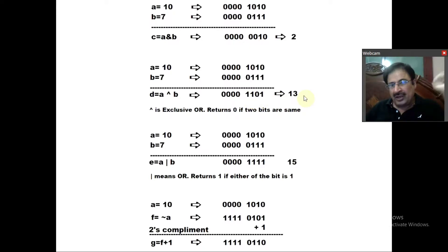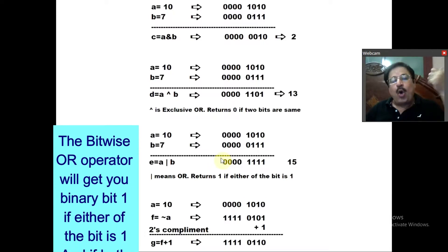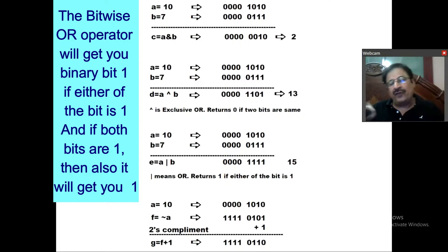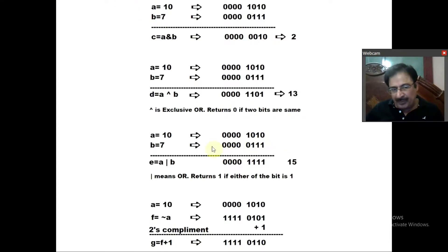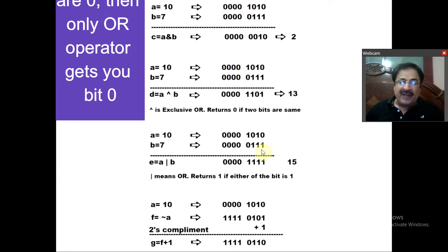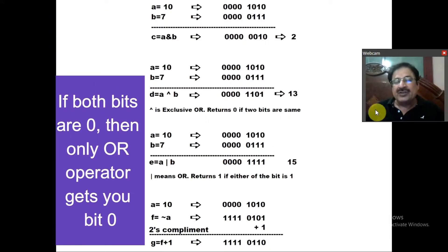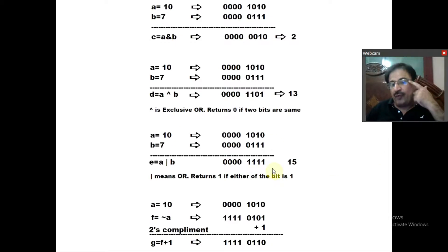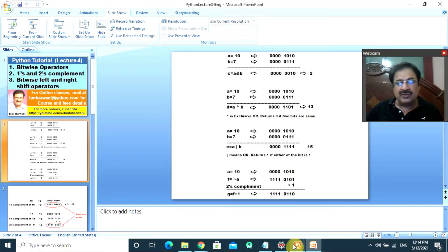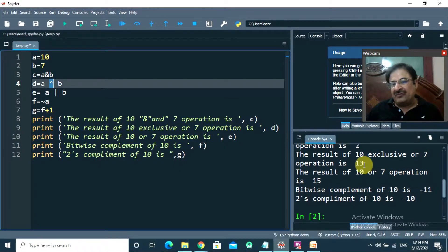The OR operator gives 1 if either of the bits is 1; if both are 1 it also gives 1. Only if both are 0 does OR give 0. So: 0 OR 1 = 1, 1 OR 1 = 1, 1 OR 0 = 1; both 0 gives 0. The bitwise OR of 10 and 7 gives the decimal value 15. So XOR of 10 and 7 was 13, OR of 10 and 7 is 15.